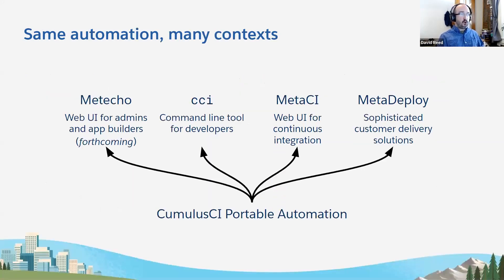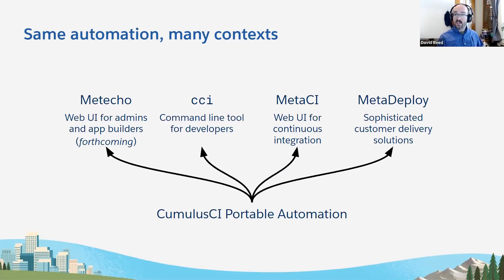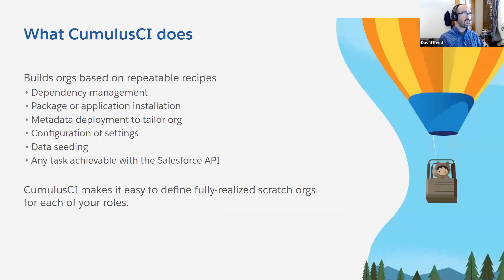We call our Cumulus CI automation portable because it works the same way in many different contexts. It's not different for end users versus continuous integration — it's actually the same steps. We have four applications that consume this portable automation: Cumulus CI, our command line tool for developers; MetaCo, our forthcoming web UI for admins and app builders; Meta CI, our continuous integration tool; and MetaDeploy, which allows customers to bring their own orgs and have our products delivered using portable automation.